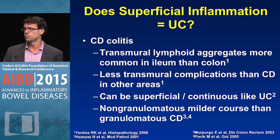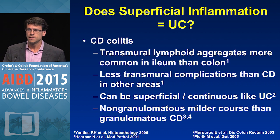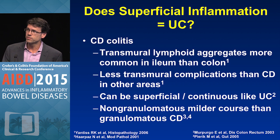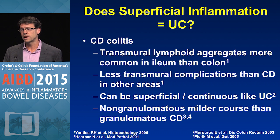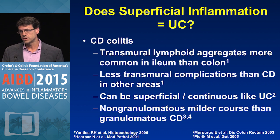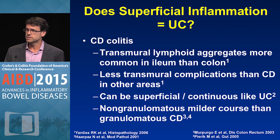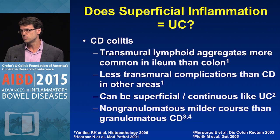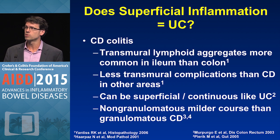How about the corollary — does superficial ulceration mean that you have ulcerative colitis? It turns out Crohn's disease of the colon is less often associated with transmural lymphoid aggregates or transmural complications than Crohn's disease in other parts of the GI tract. Crohn's colitis can also be superficial and continuous, just like UC. And in non-granulomatous Crohn's colitis, it can have a milder course and very closely mimic UC.